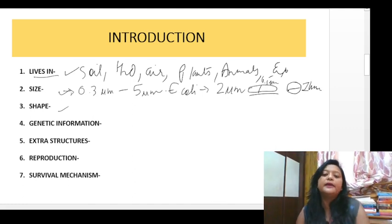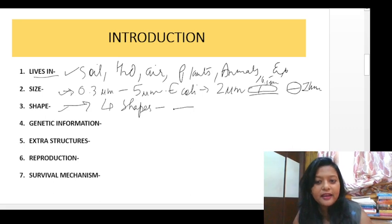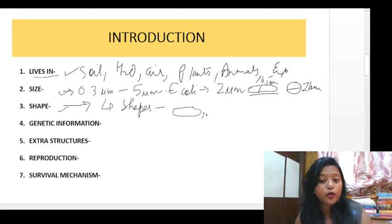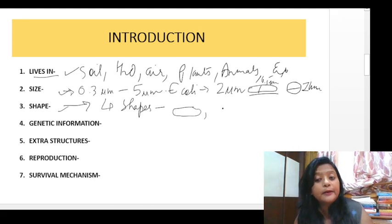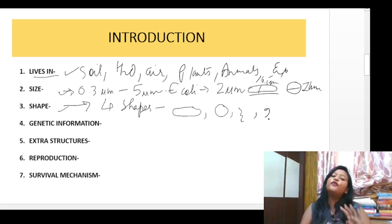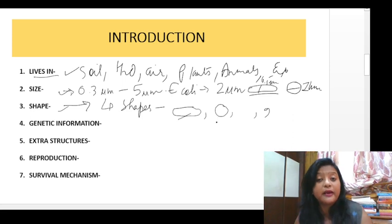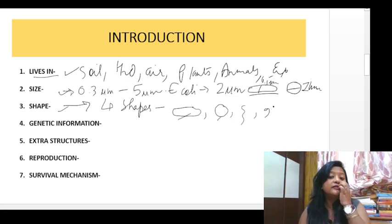Bacteria can be of 4 shapes. First is rod shape — cylindrical type. Second is coccoid shape — spherical or round. Third is spiral shape. Fourth is comma shape. Examples: rod shape — Bacillus; coccoid shape — Streptococcus, Staphylococcus; spiral shape — Spirilla; comma shape — Vibrio.